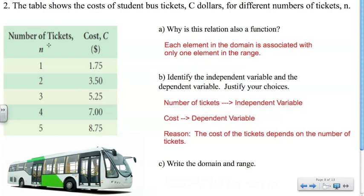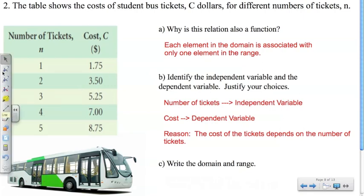An easy way to identify them: the independent variable is always associated with the domain, which is the first set, and the dependent variable is associated with the range, which is the second set.